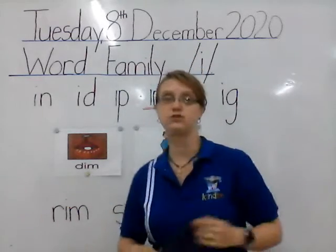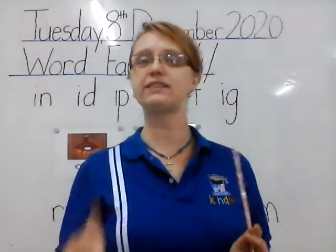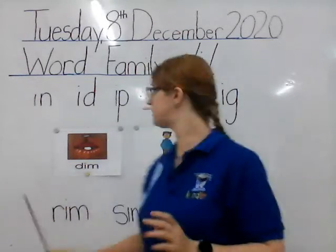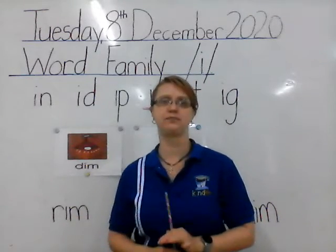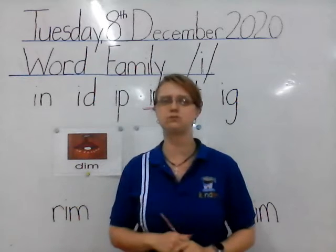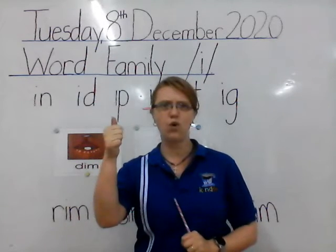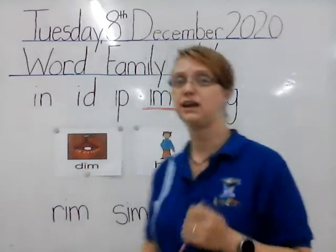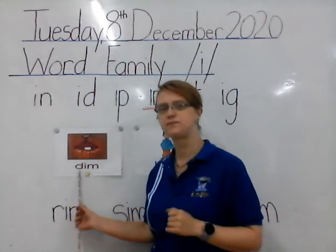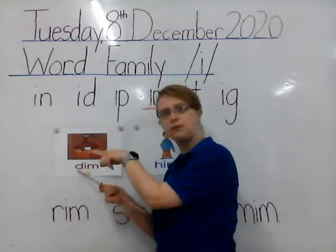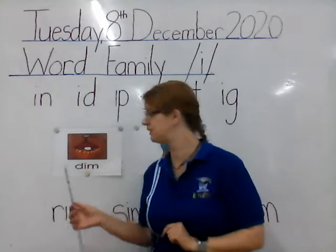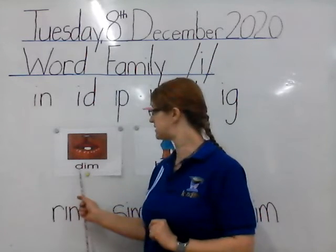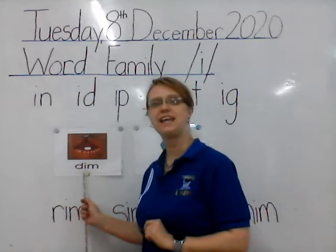Let's start with our words. Remember we are adding another letter to the front of the word family to make a new word. The first one is 'dim'. We dim the lights when we watch movies — so when we put the lights off so it's a little dark but there's still light coming through the windows, that's dim. So let's spell it together. Which letter is this? That's a D. Remember the bottom of the bubble is pointing that way, so it's the letter D. What sound does the letter D make? It makes the sound 'd'.